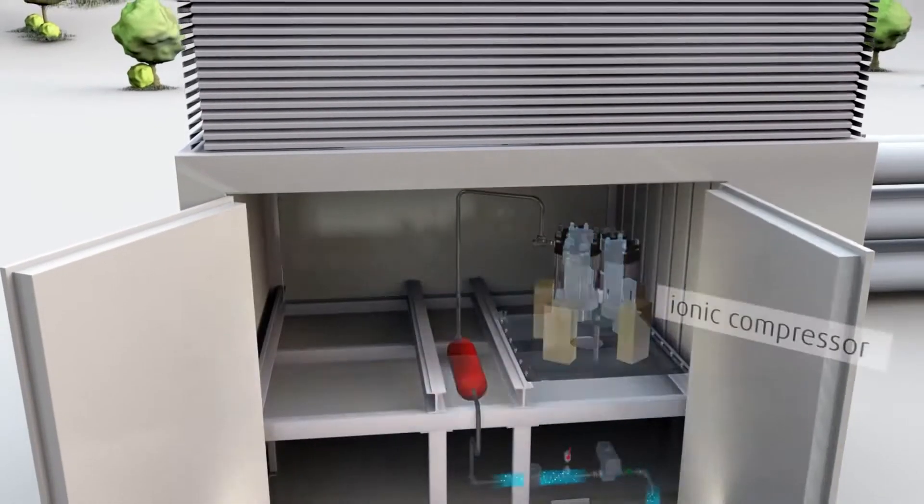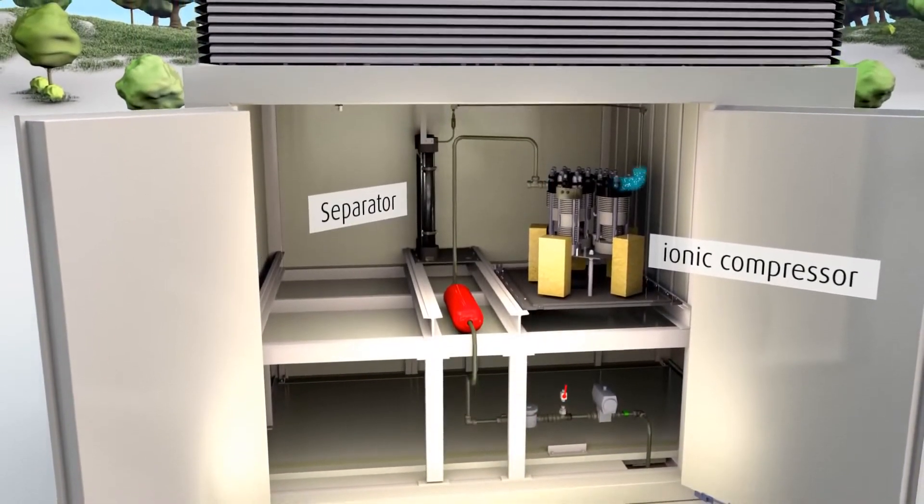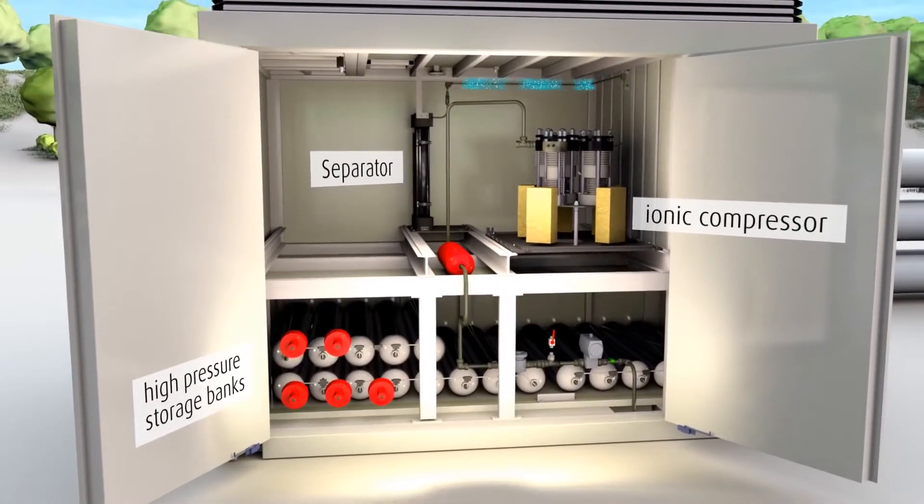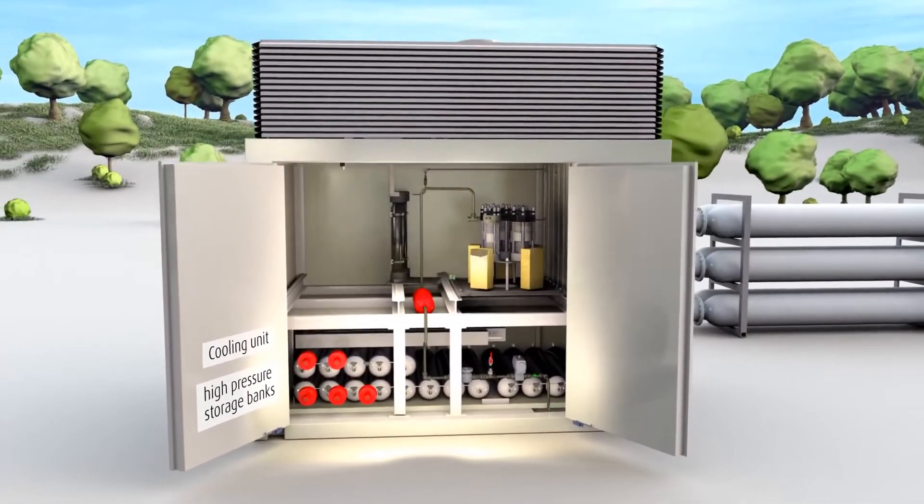The main modules of the compressor station are the ionic compressor together with the downstream separators, as well as the high pressure storage banks and finally the cooling unit. All the modules are housed in a 14-foot container. So how does the ionic compressor actually work?